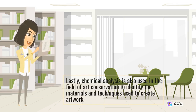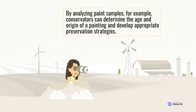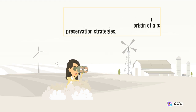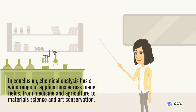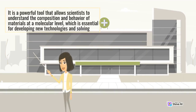Lastly, chemical analysis is also used in the field of art conservation to identify the materials and techniques used to create artwork. By analyzing paint samples, for example, conservators can determine the age and origin of a painting and develop appropriate preservation strategies. In conclusion, chemical analysis has a wide range of applications across many fields, from medicine and agriculture to material science and art conservation. It is a powerful tool that allows scientists to understand the composition and behavior of materials at a molecular level, which is essential for developing new technologies and solving complex problems.